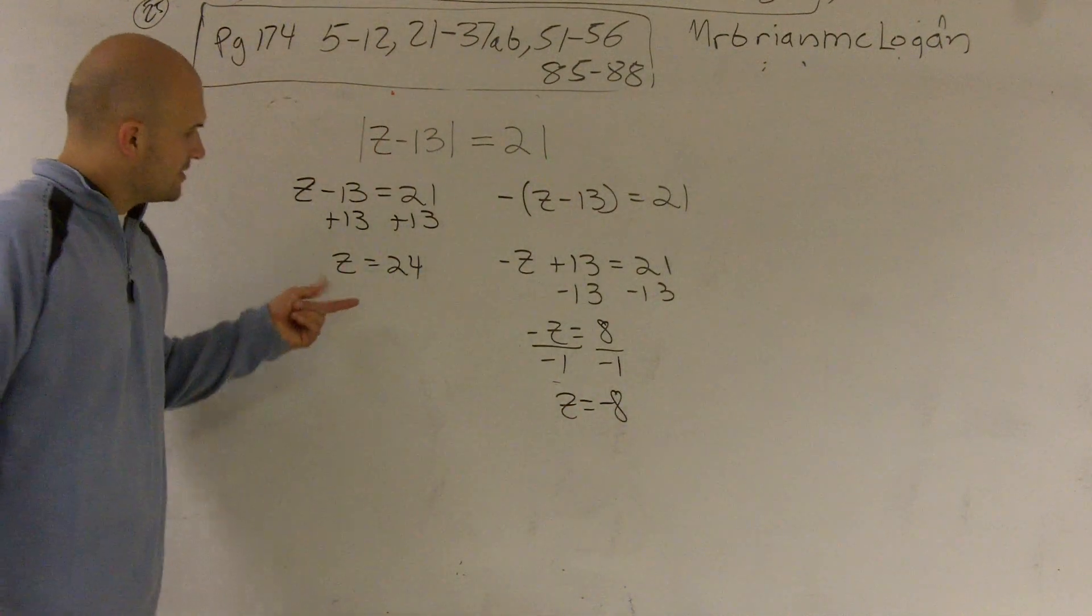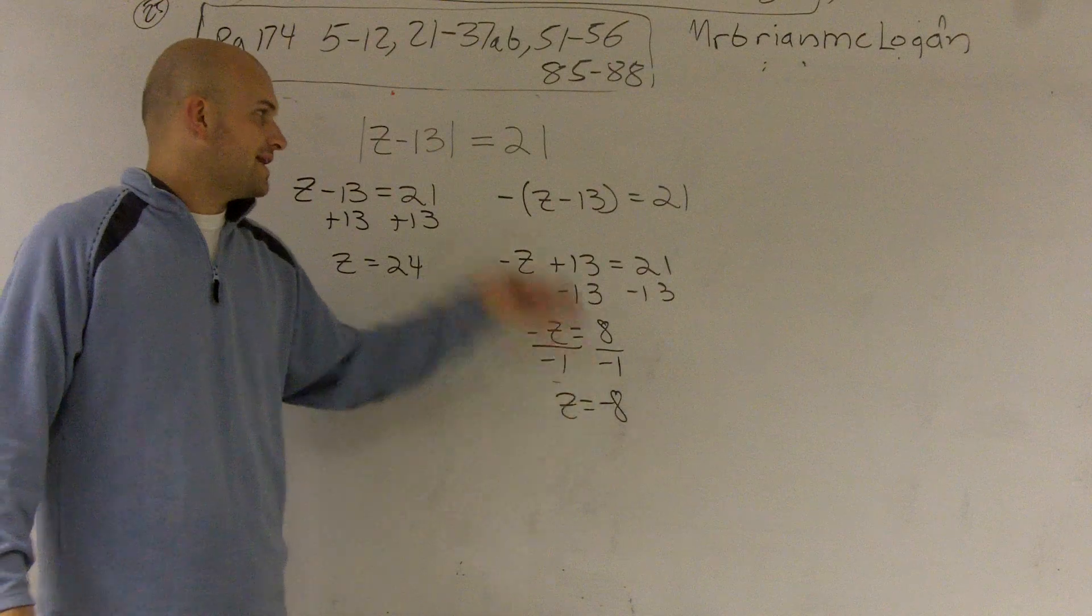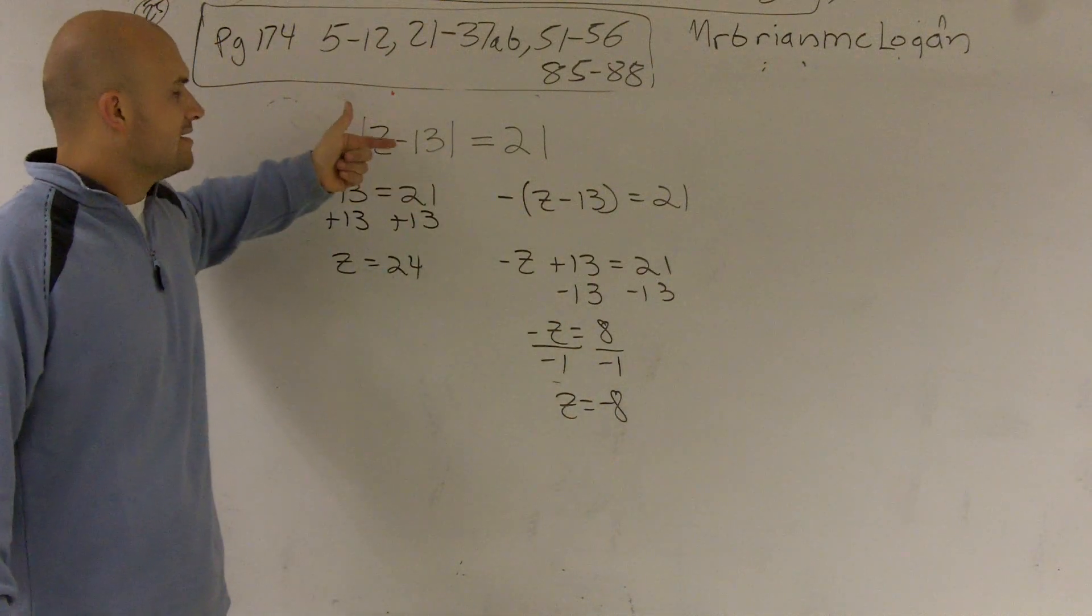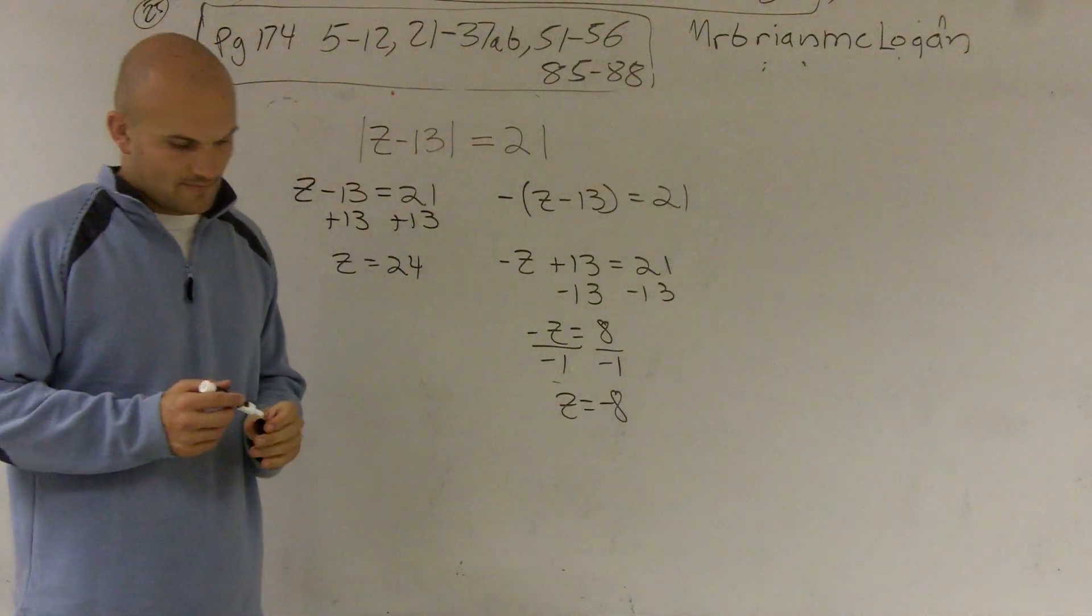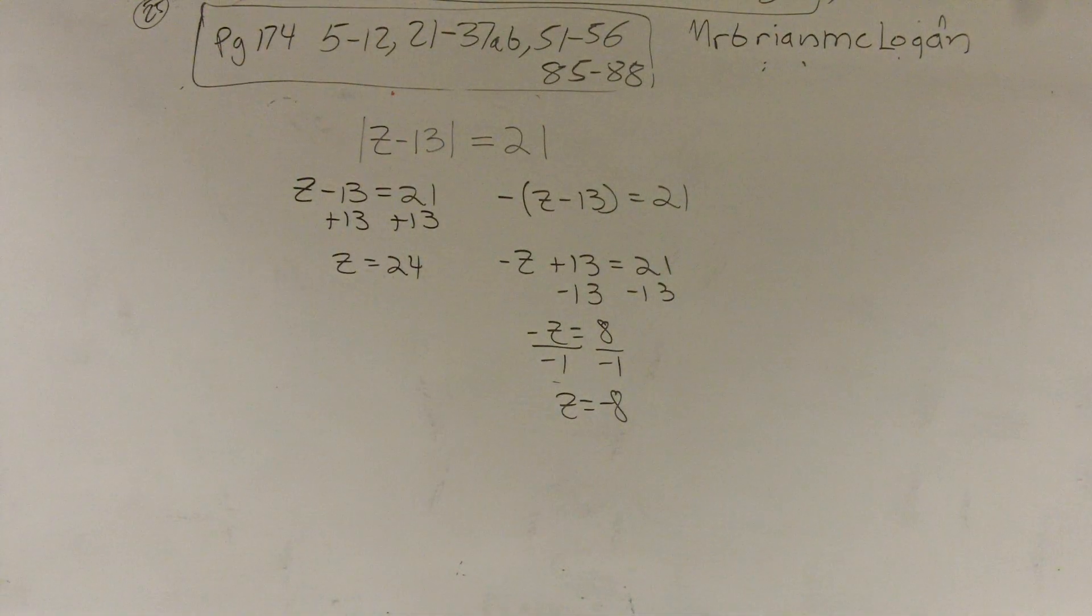That means if I use the value of 24 or my value of negative 8 and I plug them in for z, I would still get the absolute value that's going to give me 21. Right. Come on, let's go.